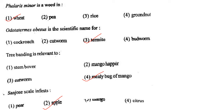Next one: Odontotermes obesus is the scientific name for option 1, cockroach; option 2, cutworm; option 3, termite; option 4, budworm. Answer is option 3: termite.